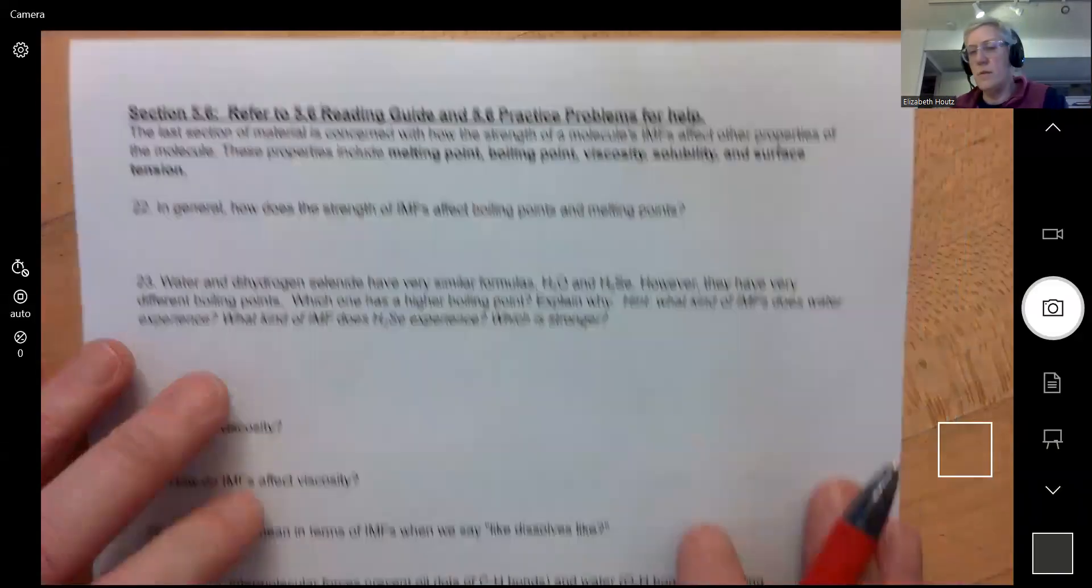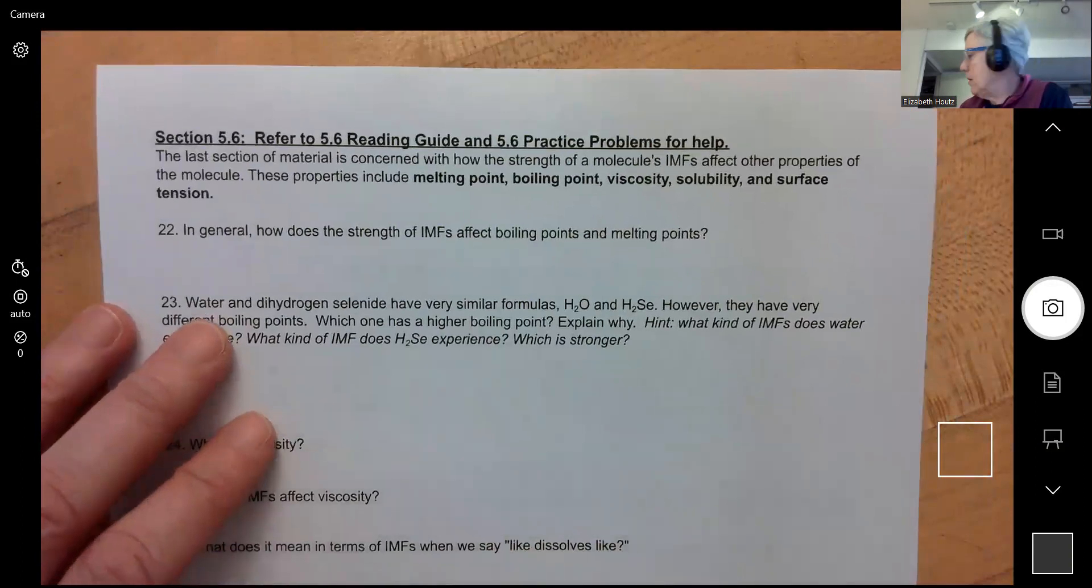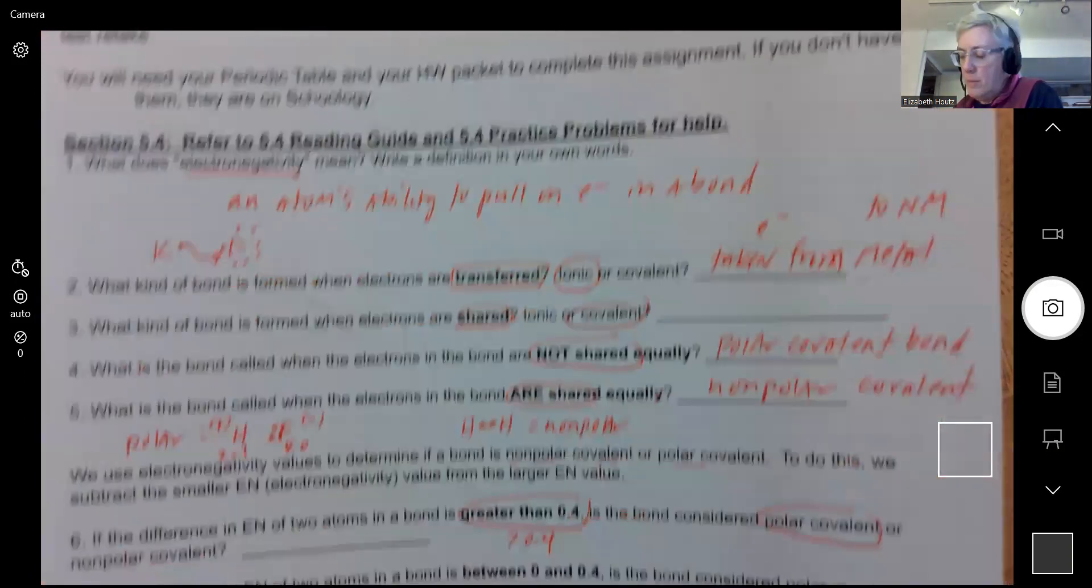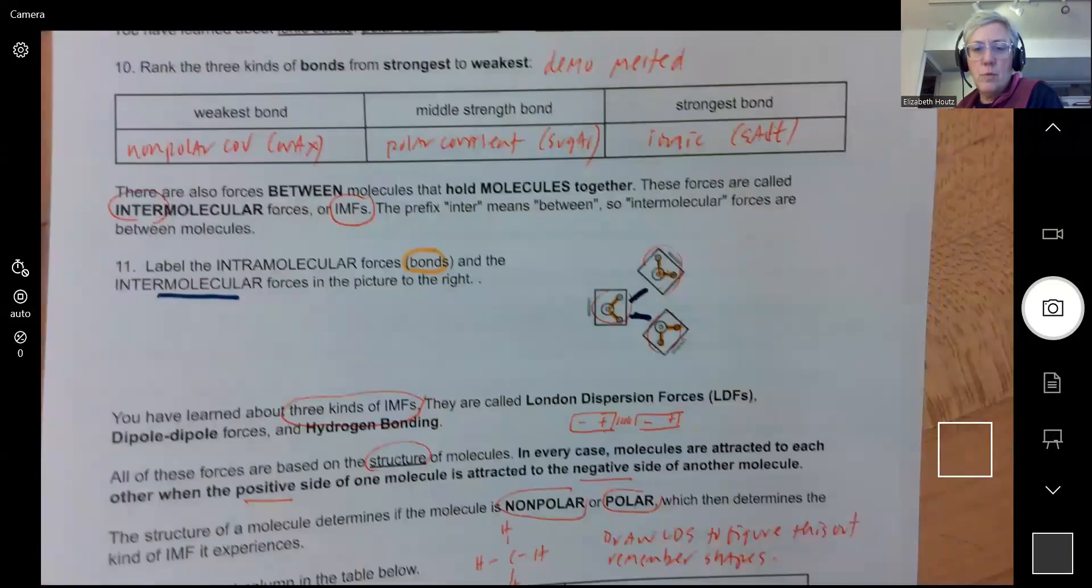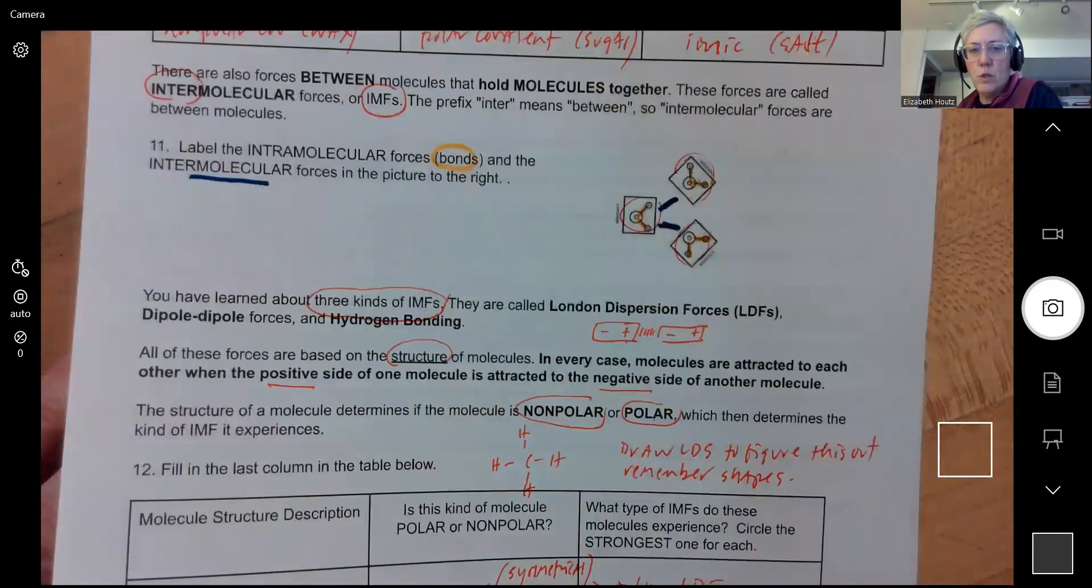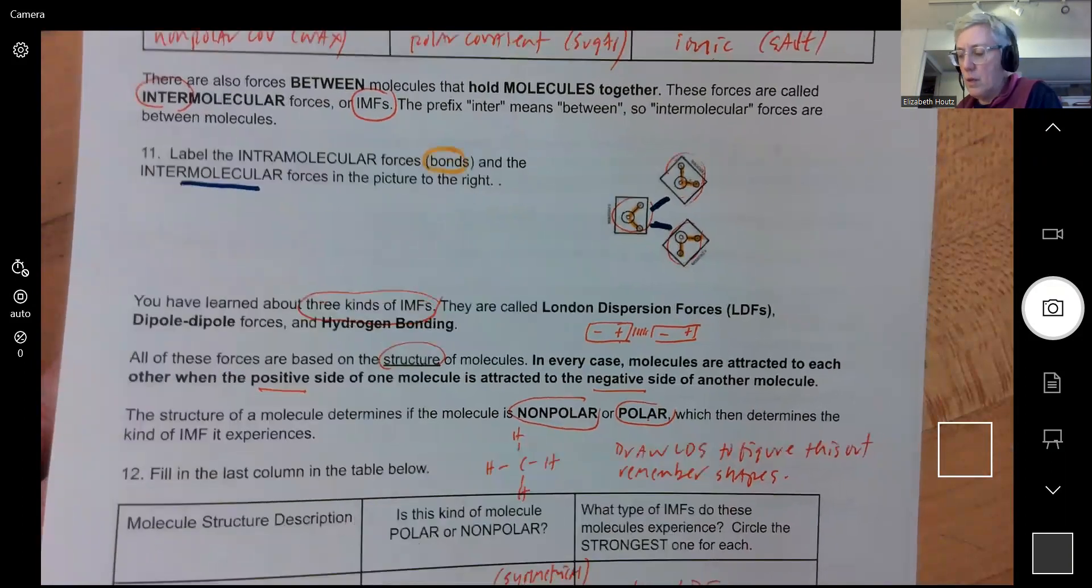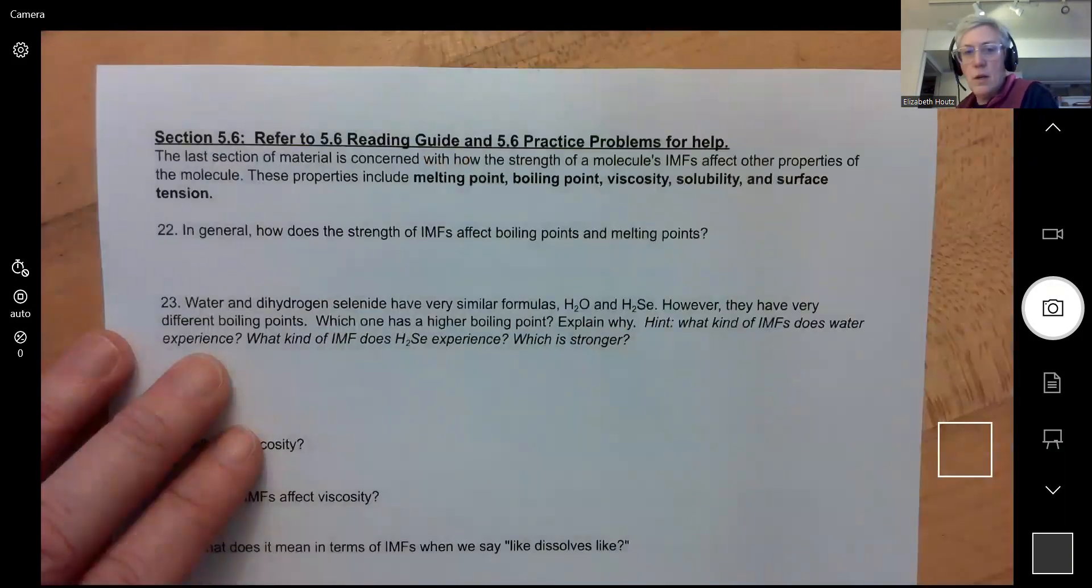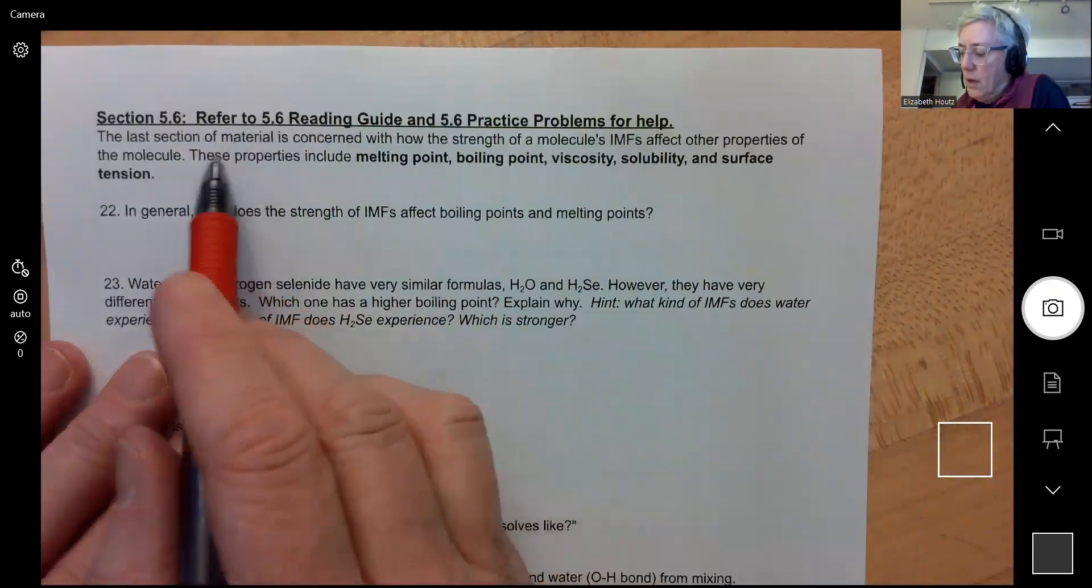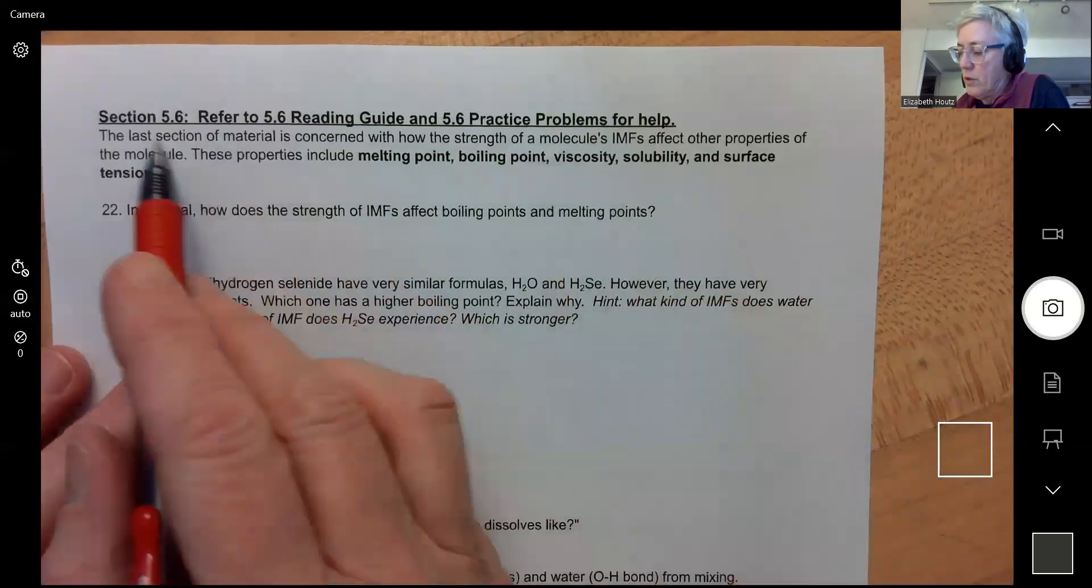All right, this is video four for your chapter 5B bonus assignment. We talked about bonds and whether bonds were polar or non-polar, and then we talked about molecules and whether molecules were polar or non-polar and what kind of forces happened between molecules, intermolecular forces.